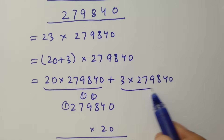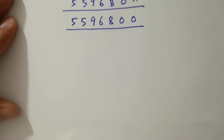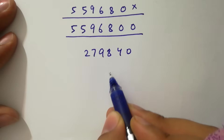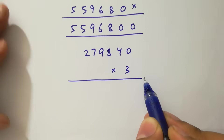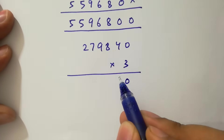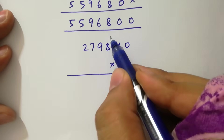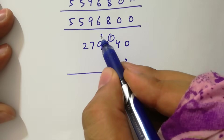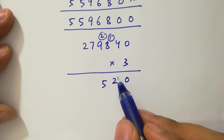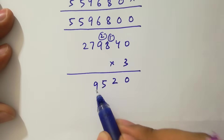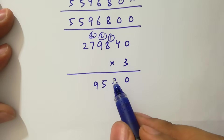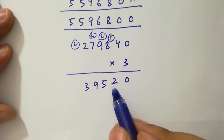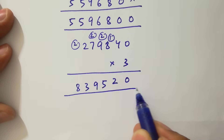Next, take 3 times 279,840. 3 times 0 is 0, 3 times 4 is 12 (write 2 carry 1), 3 times 8 is 24 plus 1 is 25 (write 5 carry 2), 3 times 9 is 27 plus 2 is 29 (write 9 carry 2), 3 times 7 is 21 plus 2 is 23 (write 3 carry 2), 3 times 2 is 6 plus 2 is 8. So 279,840 times 3 equals 839,520.